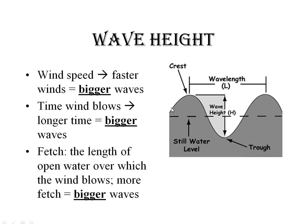Waves are produced by wind. The faster the wind blows, the larger the waves. The longer the wind blows, the larger the waves. And if the wind blows over a larger area, you get bigger waves. This is why a lake gets bigger waves than a swimming pool, and an ocean gets bigger waves than a lake.